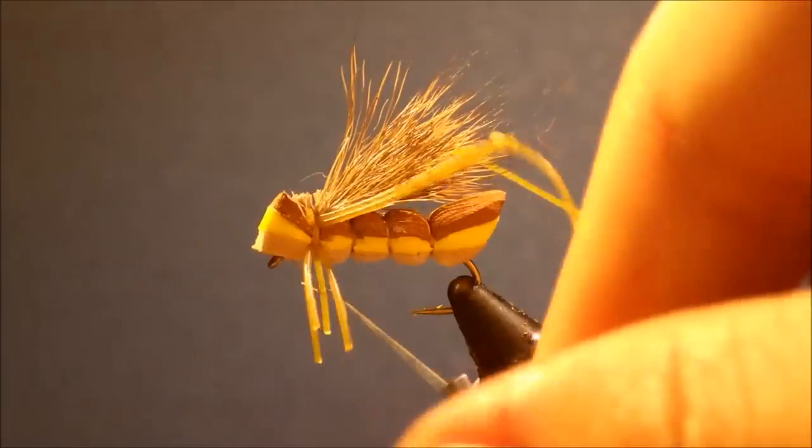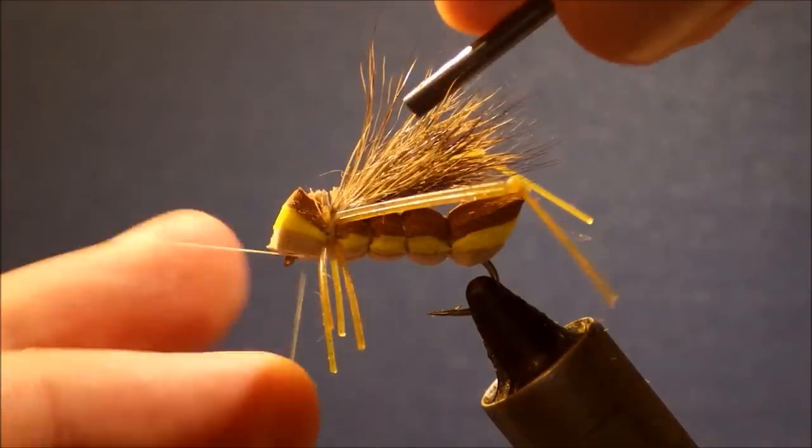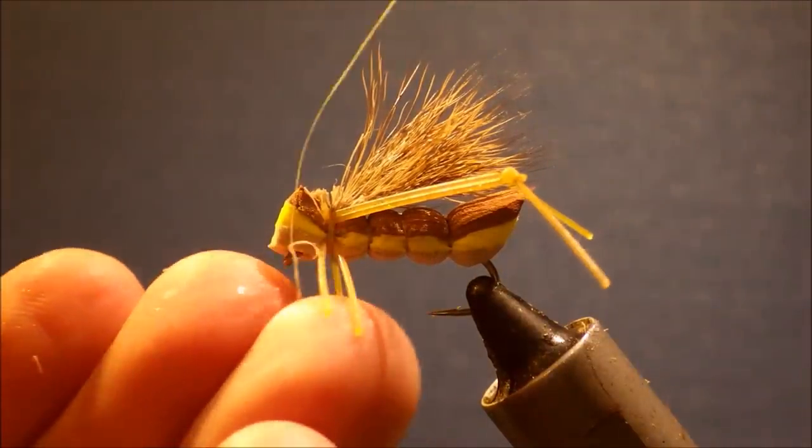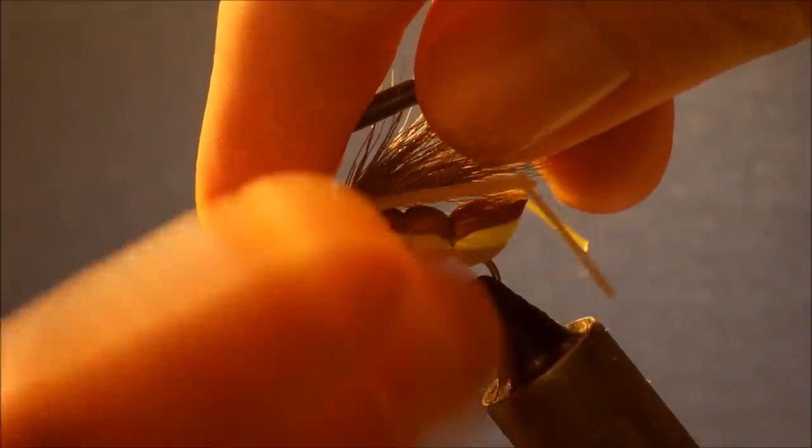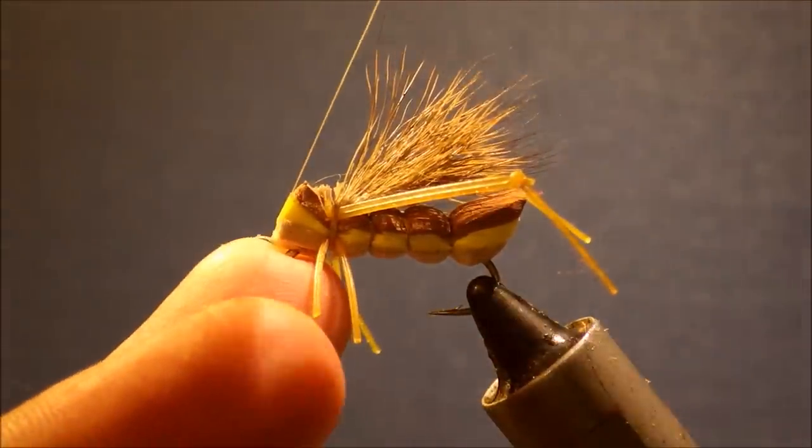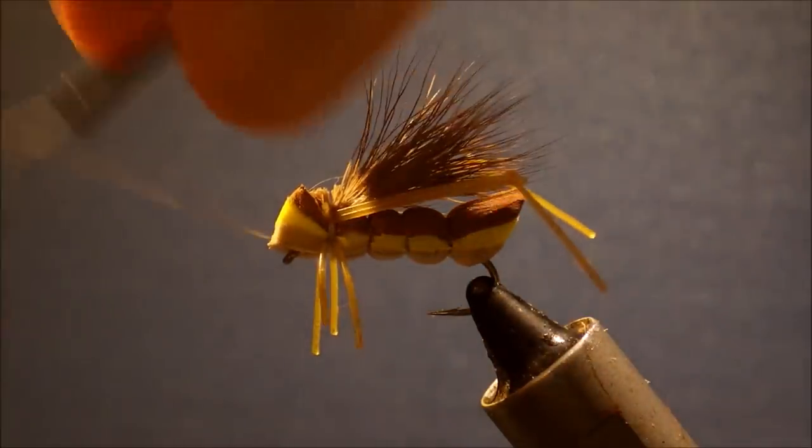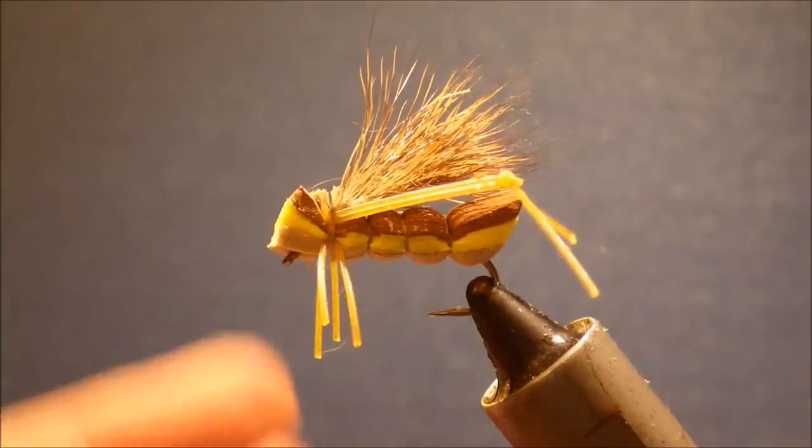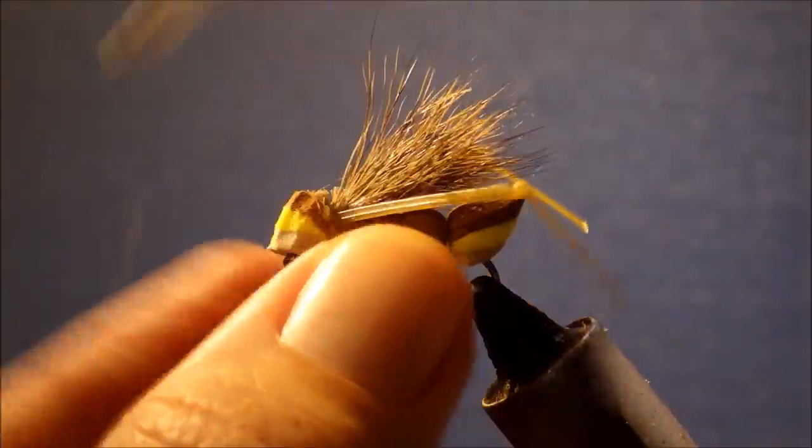And then I'll just take my thread to the front, do a quick whip finish. That's the tie-in done. All that's left there is I like to just sort of round off the head a wee bit, just single cut, take the corners off.